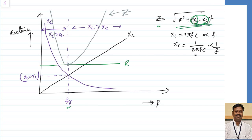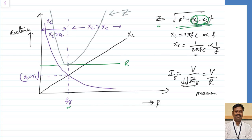When impedance is minimum, current I = V/Z is maximum. At resonance condition, ZR = R, so current = V/R, which is the maximum value. As ZR is minimum at resonance, automatically current will be maximum.